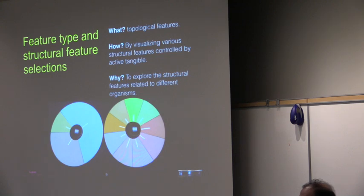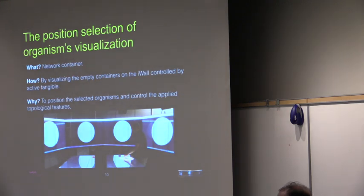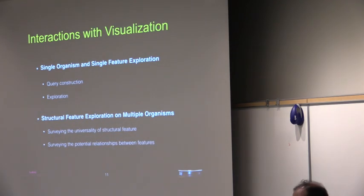For example, by stacking the filter actable on top of the organism actable. The system also allows users to position their selected organisms on the large eye-wall display in order to make comparisons. When the user selects the network's workspace with an actable, four empty workspace containers appear both on the eye-wall and the table-top. These remain empty till they are filled by a selected organism.